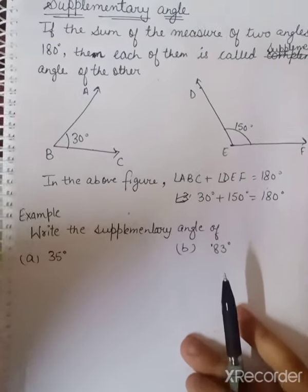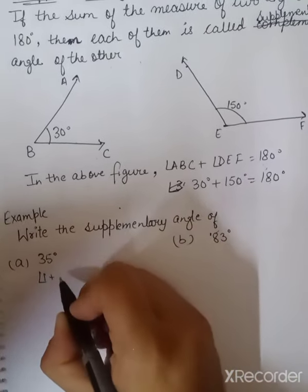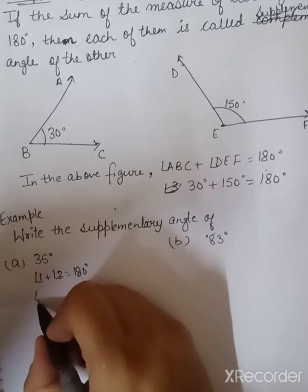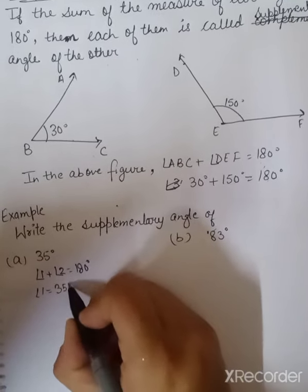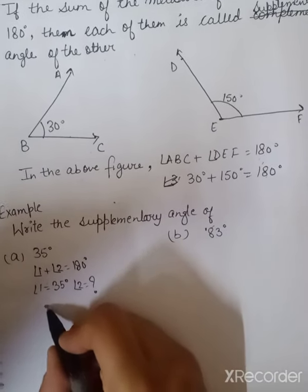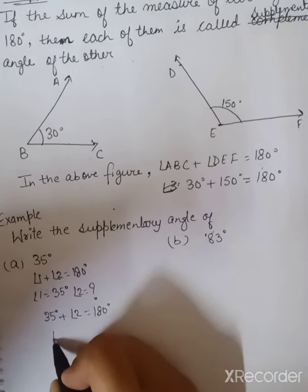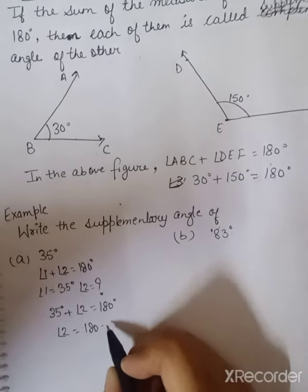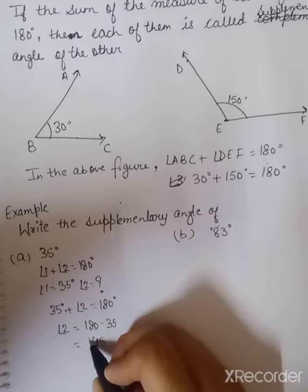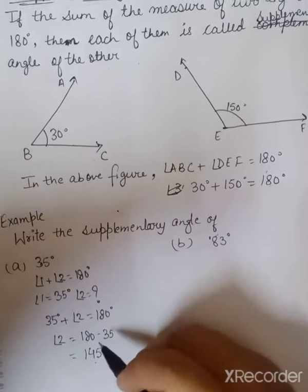Now we have one example: write the supplementary angle of 35 degrees. We know that angle 1 plus angle 2 should be equal to 180 degrees. Angle 1 is 35 degrees. We don't know angle 2. So we write: 35 plus angle 2 equals 180. We deduct 35 from 180 and get 145. When we add 145 plus 35, the sum is 180 degrees.